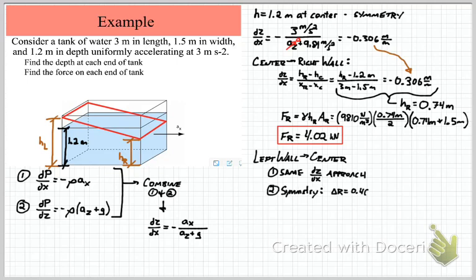The second approach is to realize that there's a symmetry to the problem, so that if the right hand side goes down by 0.46 meters, the left hand side must go up by that amount. Either way, you ought to find a left hand height of 1.66 meters.